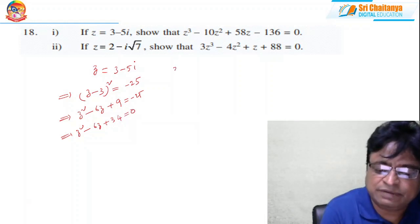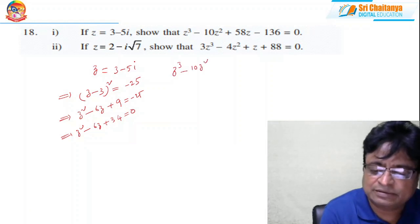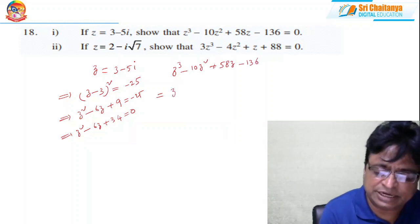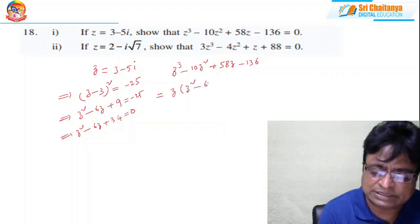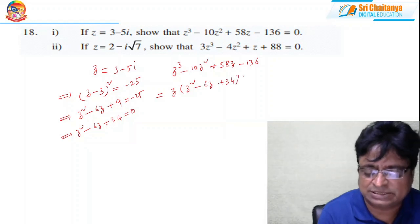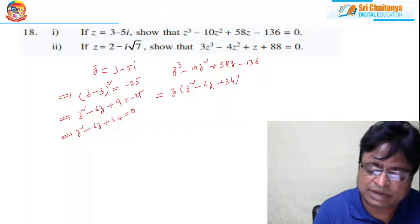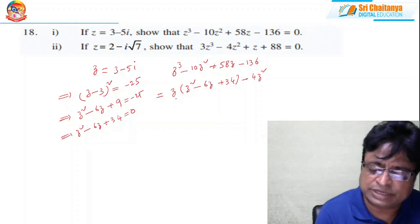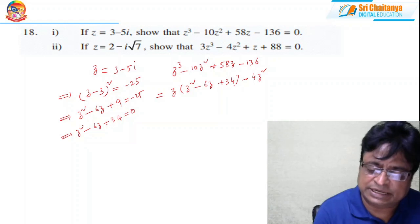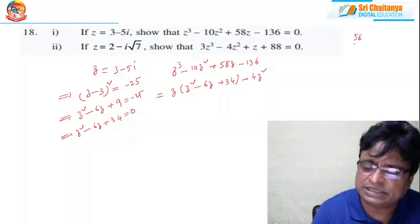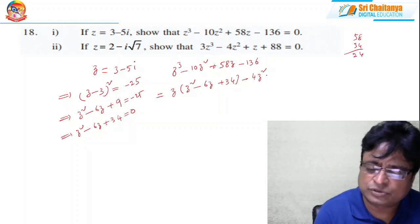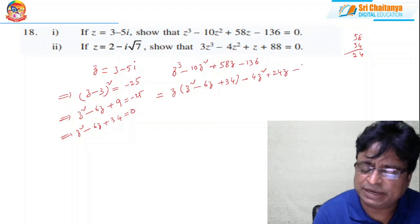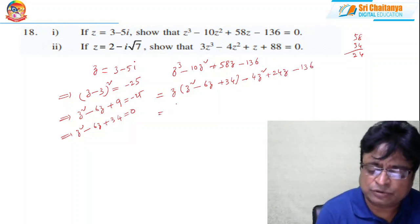The given expression z³ − 10z² + 58z − 136 can be written as z(z² − 6z + 34) plus balancing terms. This gives z·(z² − 6z + 34) − 4z² + 24z − 136. Since the extra terms are −4z² + 24z − 136, we group them.